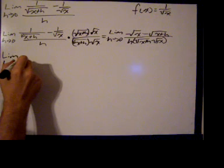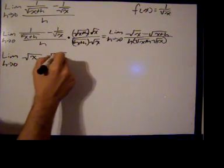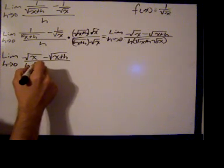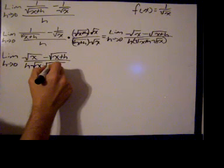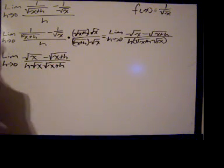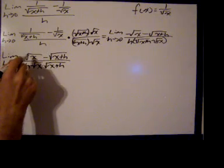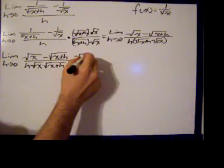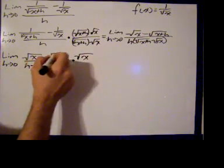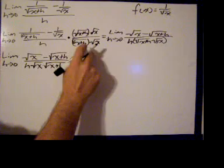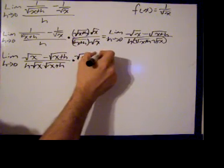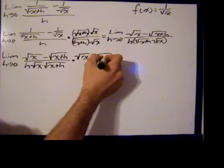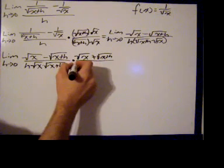Still have the 0 over 0 form. So now I'm going to multiply the numerator and denominator by the conjugate of the numerator. We do this when we have radicals in the numerator in 0 over 0 form and the radicals are separated by a sum or difference. The conjugate is the square root of x plus the square root of x plus h. Multiply top and bottom by it.